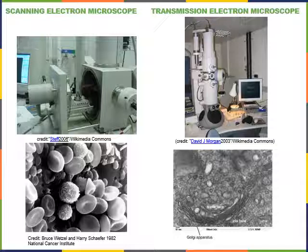A transmission electron microscope is useful for exploring the details of internal structures inside a cell in order to study the structure of organelles. We can see in the image in the lower right the Golgi apparatus, an organelle found inside most cells, which has the structure of flat membranous discs.